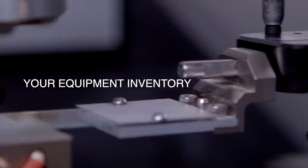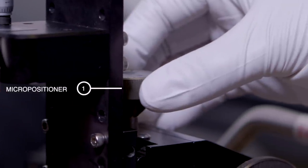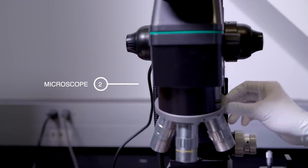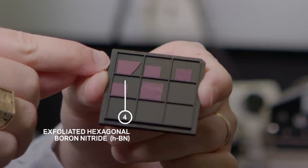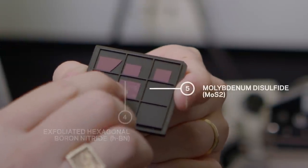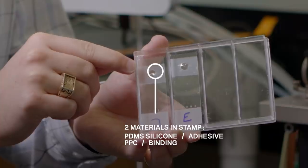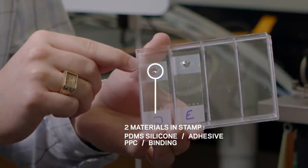To create this nanomaterial stack, we'll need the following equipment: a micropositioner, a microscope, a heater, chips with exfoliated hexagonal boron nitride and molybdenum sulfide, and a stamp on a glass slide. You'll use this stamp to pick up layers from one chip and move them over to another chip.